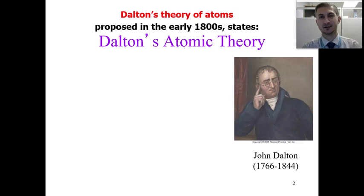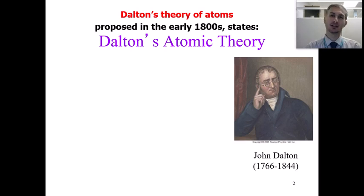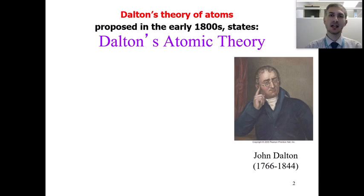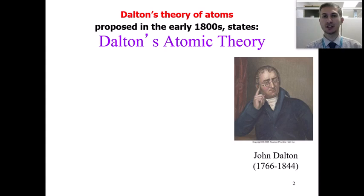Hello everyone, we are doing well. I'm going to talk about chapter 4. This chapter we are going to talk about the periodic table and elements as one type of pure substances. Before going forward, I need to have a quick review of the history of chemistry to find out what happened in the last centuries and decades to discover these elements.